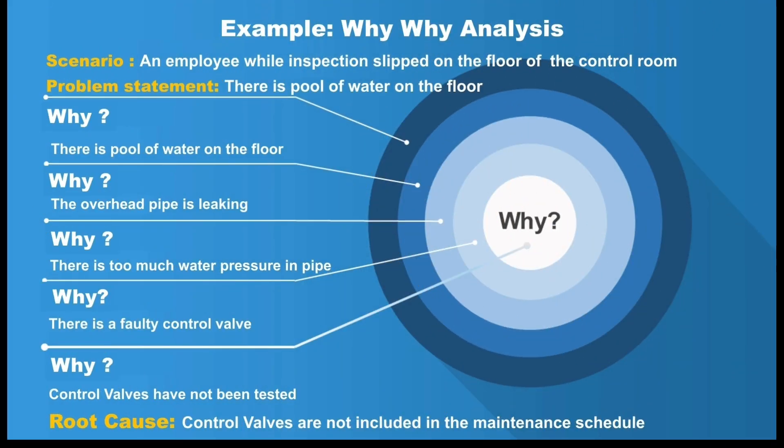Now let us understand the YY analysis with the help of an example. A maintenance expert while performing inspection in a control room slips and falls on the floor. The control room floor is slippery because of the presence of water on it. The problem is: there is a pool of water on the floor. We start asking — why is there a pool of water on the floor? The answer: because the overhead pipe is leaking.